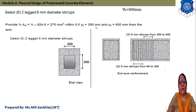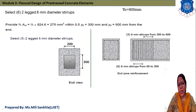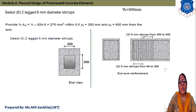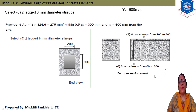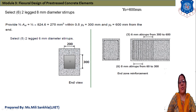We also provide 2-legged 6 mm diameter stirrups. The end view of the bearing plate shows a 200 mm × 300 mm section with end zone reinforcement: 8 mm stirrups from 60 mm to 300 mm (two-thirds Ast), and 6 mm stirrups from 300 mm to 600 mm (one-third Ast). The end zone reinforcement design is now complete. In the next session, we start a new topic: composite sections.